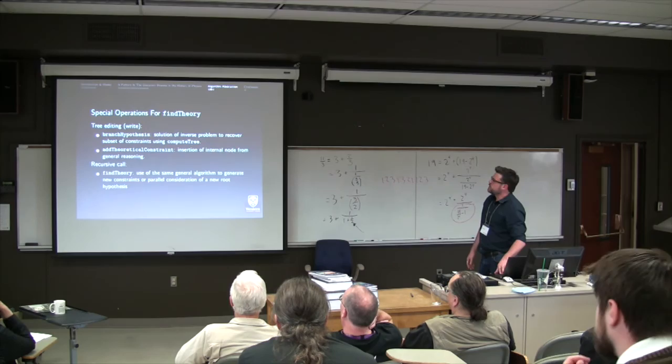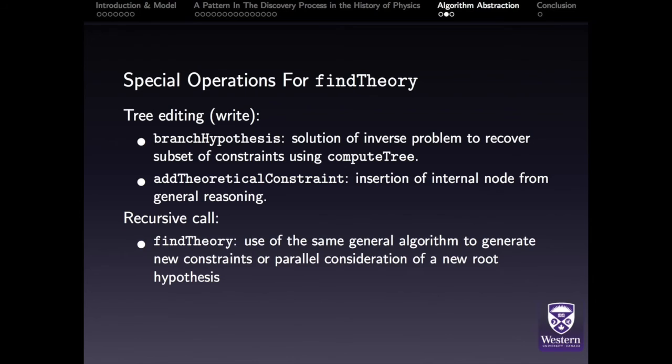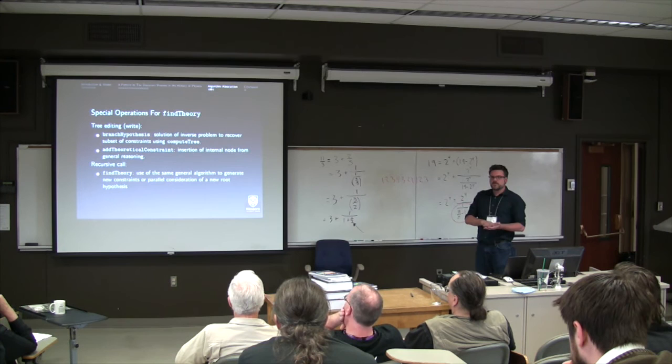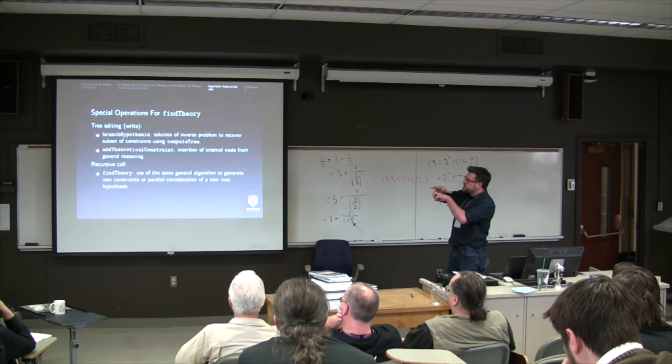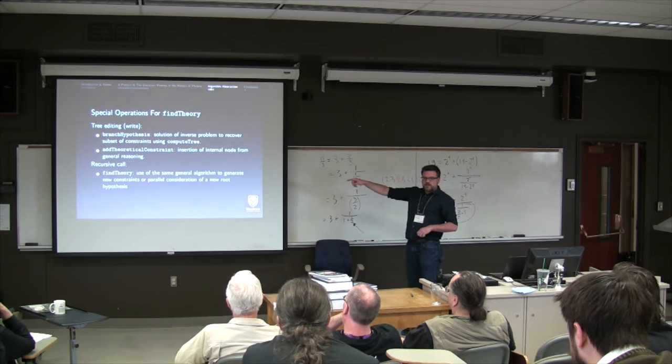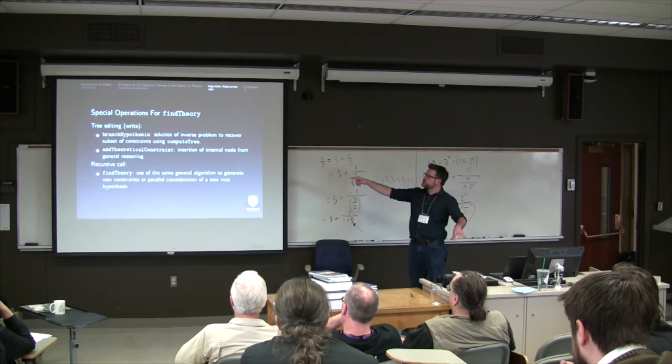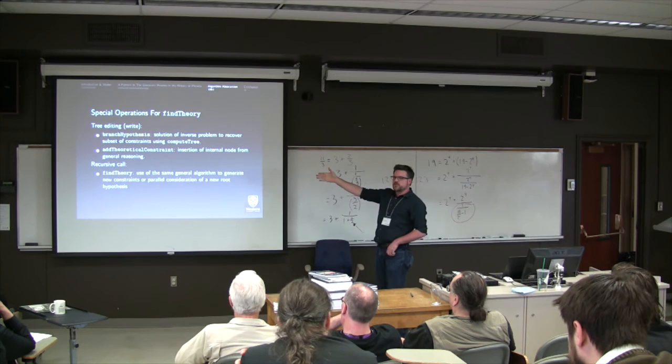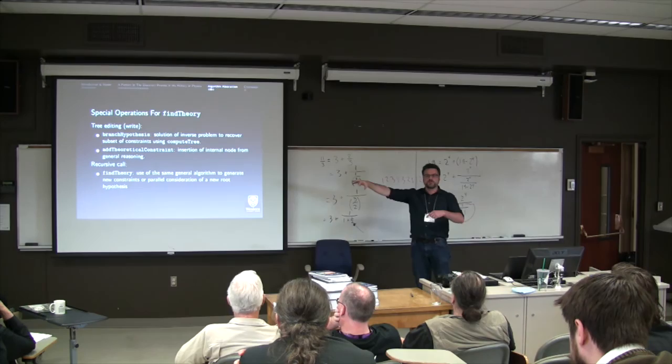So you need to be able to write to the tree as well. So, for this solution of an inverse problem pattern, you've got a subroutine for that. And then adding a theoretical constraint, like Green did for the physical boundary conditions for an elastic solid ether model, inserts that internal node. You need a new routine for that. And then to recover things like Fresnel's argument of the same general pattern but in a more restricted area, you've got a recursive call to the same function. And parallel considerations. So some other researcher considers a new root hypothesis, like McCullagh. You can also have a recursive call to do that.